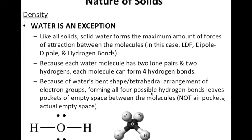Because of its bent shape tetrahedral arrangement — it's a bent shape with a 109.5° angle, which is the tetrahedral angle — all groups are 109.5 degrees apart. These hydrogens bond to the lone pair of an oxygen, and each lone pair bonds to a hydrogen. Because of the arrangement of the electron groups (where an electron group is a bond or a lone pair), forming all four possible hydrogen bonds leaves pockets of empty space between the molecules.